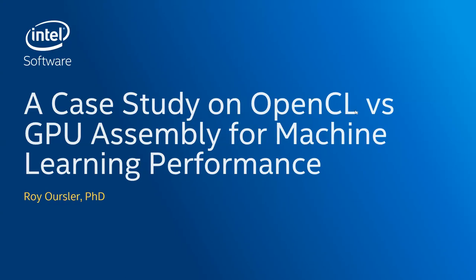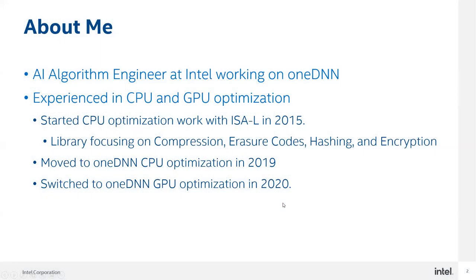Thank you for the introduction. I work on a team where we were comparing OpenCL and, in particular, we decided to look into assembly on Intel's GPUs to see the pros and cons of these implementations. I'm an AI algorithm engineer at Intel working on OneDNN, experienced in both CPU and GPU optimization. I started in CPU optimization back in 2015, moved into OneDNN in 2019, and switched to GPU optimizations in 2020.